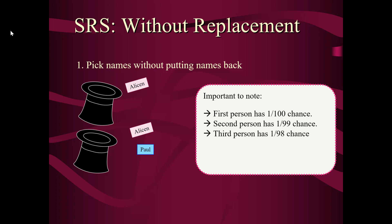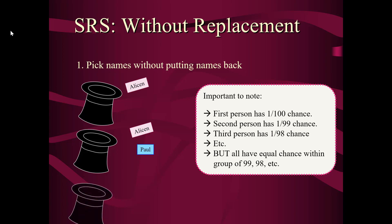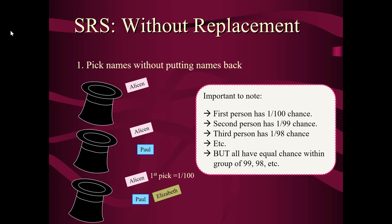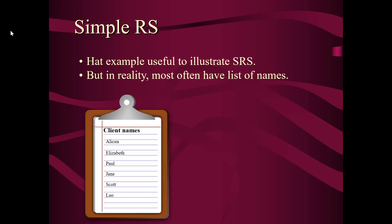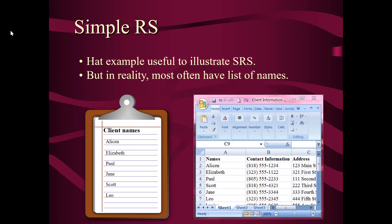The third person is 1 out of 98, and so on. But they all have equal chances within their group — 99, 98, etc. For example, when I pick Allison she's 1 in 100. But Paul was in a group with Elizabeth, Jane, Scott, and all other students — a total of 99 names — so all of them had a 1 in 99 chance. The hat example is useful to illustrate SRS, but in reality it's most often a hard copy listing or a database like Excel or Access.